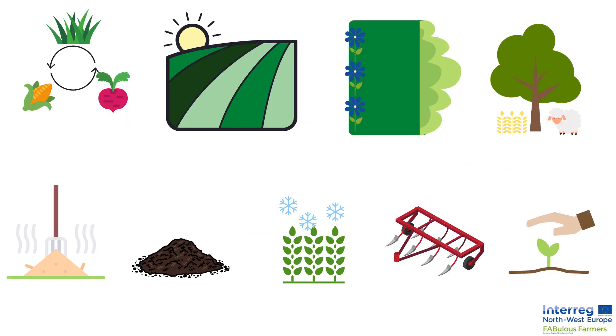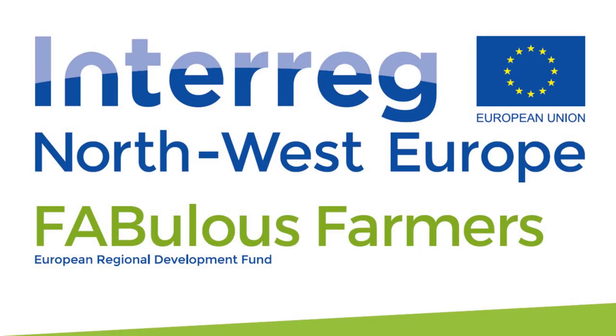By using these FAB measures, farmers can create robust fields with less dependence on plant protection products or chemical fertilizers.